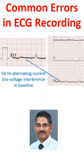If there is a source of strong electrical interference in the vicinity, it will show up in the ECG as a 50 Hz alternating current tracing in the baseline.